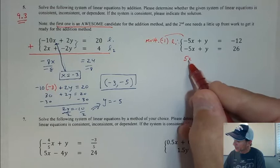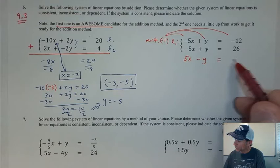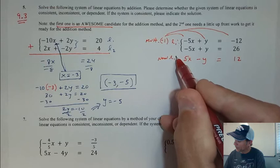If I multiply by -1 here, I would get 5x, and then multiply by -1 I get -y. And then don't forget, I have to multiply this right side by -1 and I get 12. So that's my new line 1.